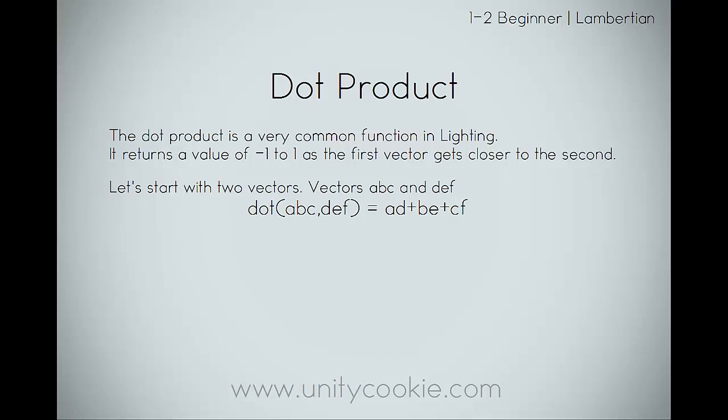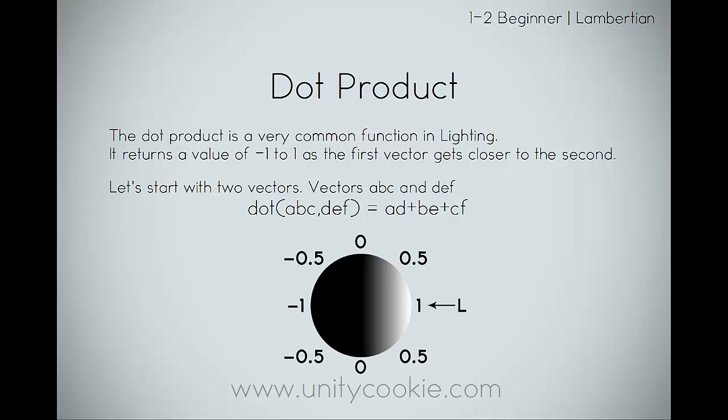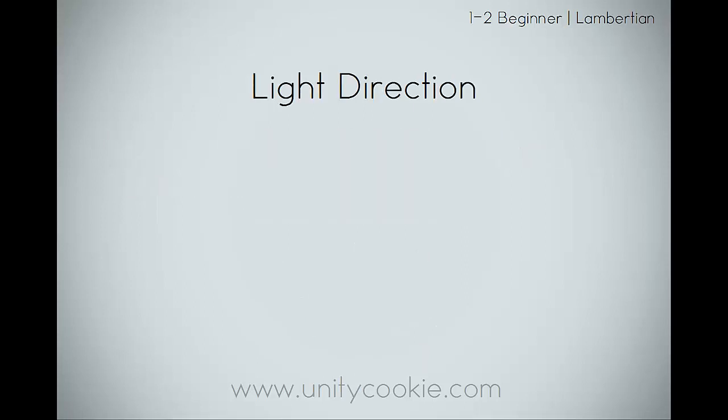It doesn't make a lot of sense looking straight at the math, but when you look at a diagram it makes a lot more sense. As the normal direction gets close to the light, it will return a value of 1, which will be white. As it faces away, it will return negative 1. When it's facing perpendicular, it will have a value of 0, which is black. We usually don't care about values less than 0, so we'll use the normalize and saturate functions to deal with that, which I'll be talking about a little bit later.